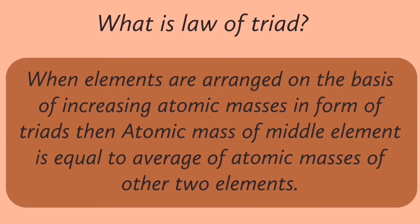There are three important points. First, Döbereiner classified the elements on the basis of their atomic masses. Second, he made triads. And third, the mass of the middle element is equal to the average of the atomic masses of the other two elements in the triad.